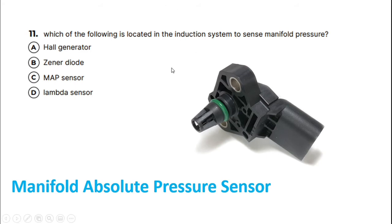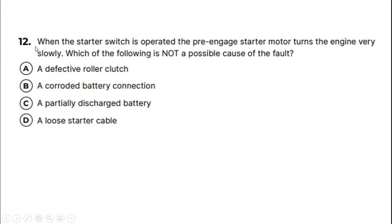Question 12: When the starter switch is operated, the pre-engaged starter motor turns the engine very slowly. Which of the following is NOT a possible cause of the fault? Now it's important to emphasize that we are looking for something that doesn't cause the fault, so it's not a possible cause.